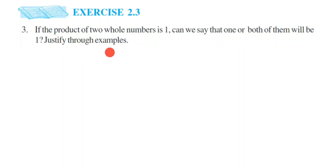So they are saying that if you're multiplying two whole numbers and your answer is 1, then one number or both numbers should be equal to 1. So what do you think? Let us take an example.